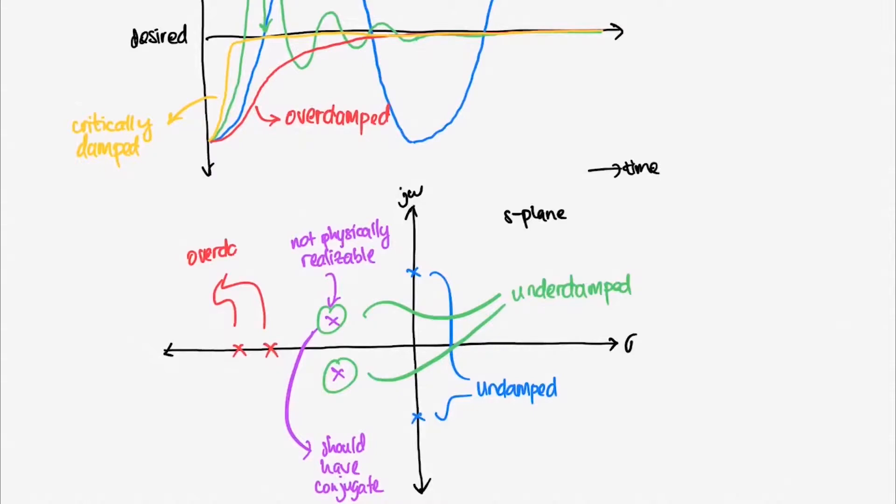Under-damped systems has poles that have imaginary component while over-damped and critically-damped systems' poles only lie at the real axis.